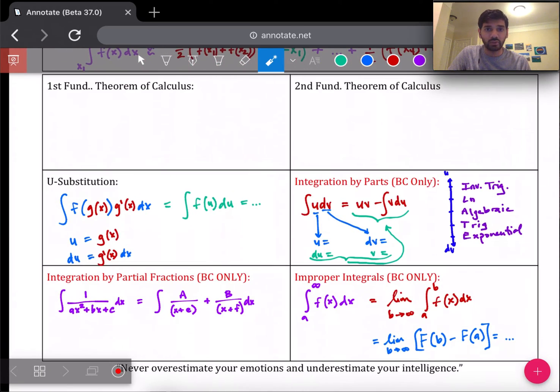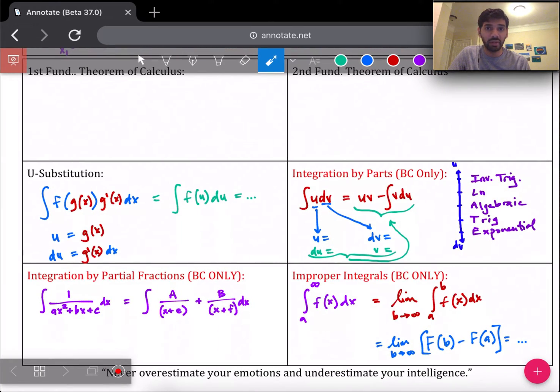In this unit, we also talk about the different methods of integrating, other than just basic integration of doing the reverse power rule. We do have u substitution, and then integration by parts as well. So these three topics here, I've written BC only. So right now, if you're taking the AB test, you don't have to worry about these three, just focus on reviewing u substitution.